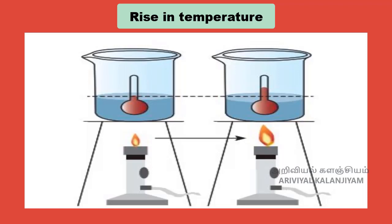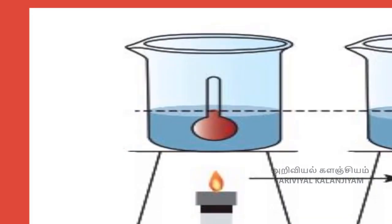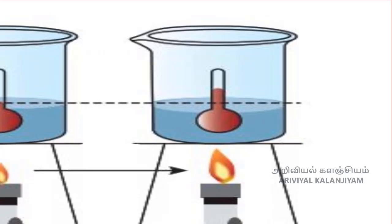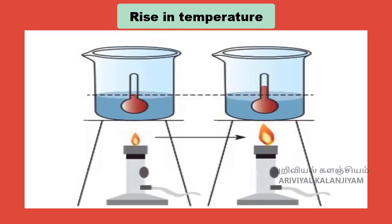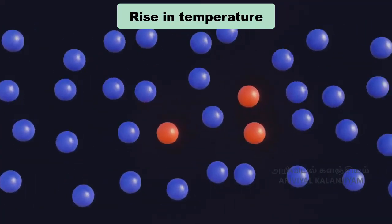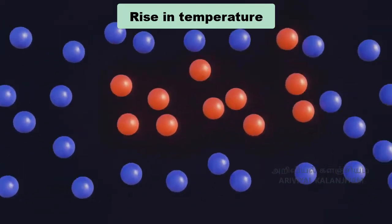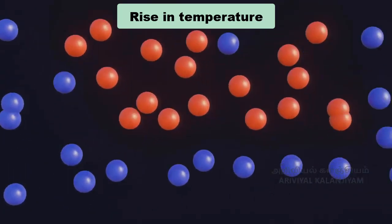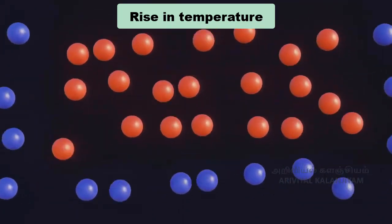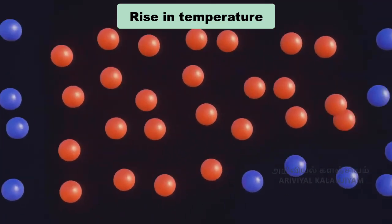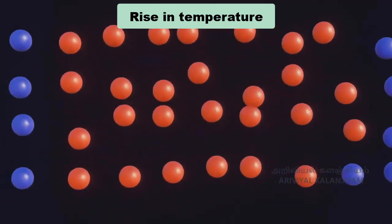The next effect is rise in temperature. Let's take a cup of water and note its temperature. Heat the water for a few minutes and note the temperature again. We can find the increase of temperature. When the water is heated, water molecules receive heat energy. This heat energy supplied increases the kinetic energy of the molecules. When the molecules receive more energy, the temperature of the water increases. This shows that heat energy causes an increase in temperature.